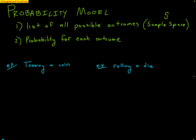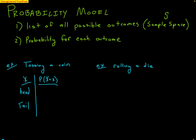Let's make a couple of probability models for two really easy examples. First, tossing a coin. When I toss a coin, there are two outcomes. We'll use a capital X to represent the possible outcome. The possible outcomes are a head or a tail. We use the notation P(X = x). X is the chance random event — tossing a coin — and the individual outcomes are little x: head or tail. The probability of getting a head is 1/2, and the probability of getting a tail is also 1/2. That is a probability model — we list all outcomes and the probability of each.